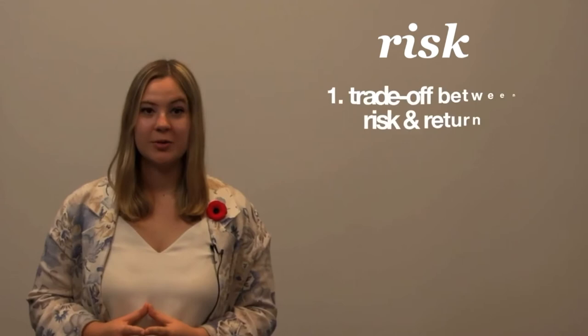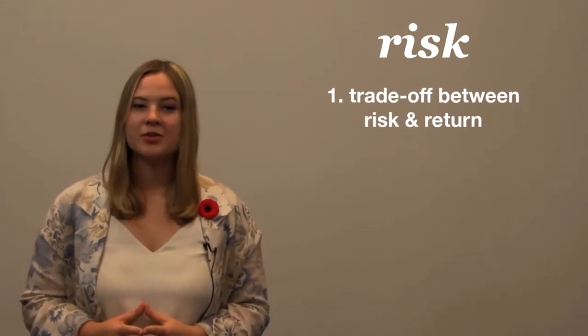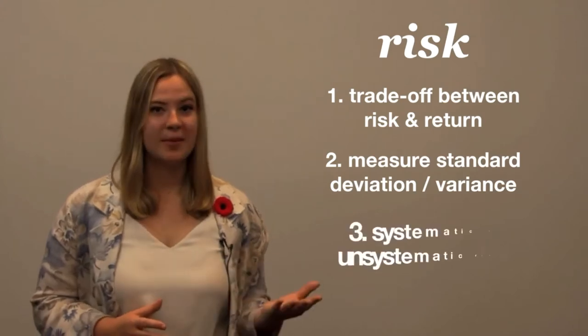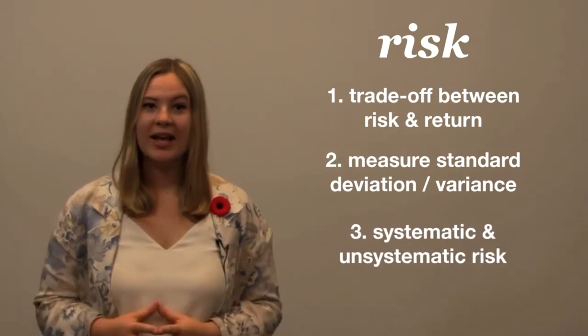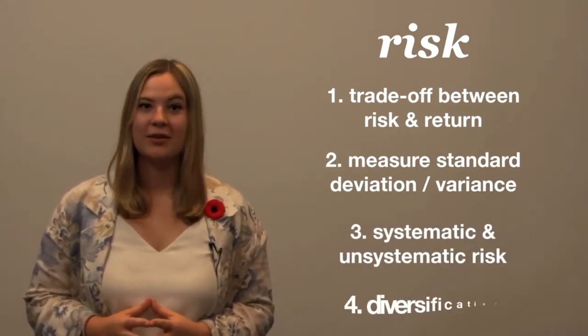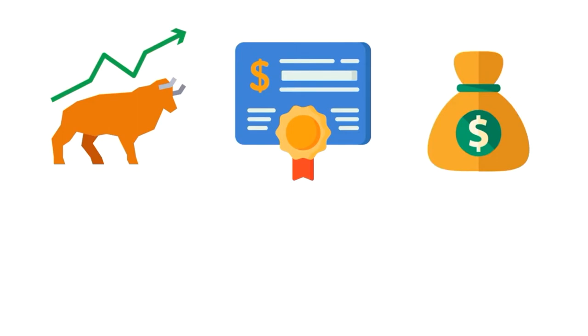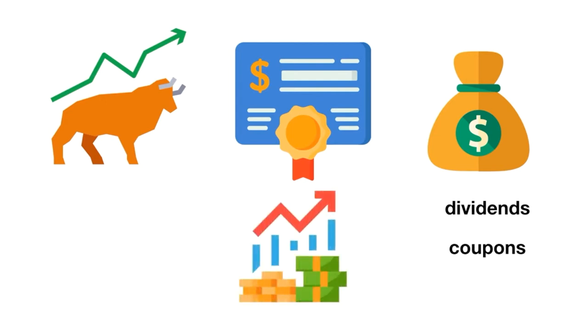By the end of this video you'll learn the fundamental trade-off between risk and return, how to measure the standard deviation or variance of returns, the difference between systematic and unsystematic risk, and how to lower unsystematic risk through diversification. We buy stocks, bonds, or other securities because we expect to earn a return on those assets. Returns can come in the form of payments like dividends or coupons, or as an increase in the asset's market price, which is known as a capital gain.